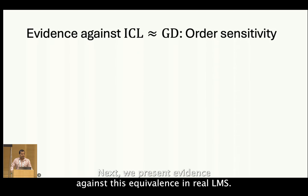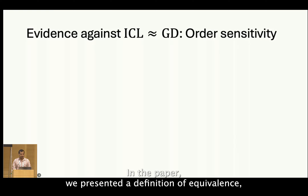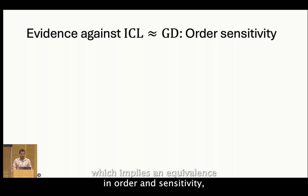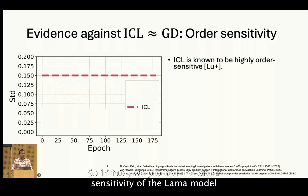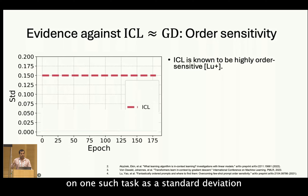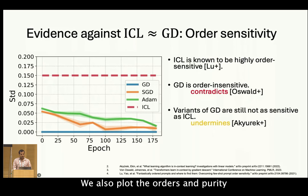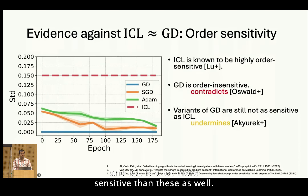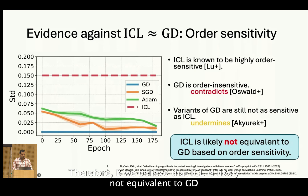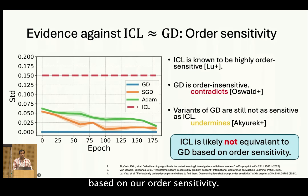Next we present evidence against this equivalence in real LLMs. In the paper, we present a definition of equivalence which directly implies an equivalence in order sensitivity. And we know that LLMs are highly order sensitive. In fact, we plotted the order sensitivity of the LLaMA model on one such task as a standard deviation in its output probabilities of individual tokens and see this high sensitivity. However, GD is order insensitive, and this directly contradicts one of the previous formulations. We also plot the order sensitivity of variants of GD like SGD and Adam, and ICL is a lot more sensitive than these as well. This undermines another formulation which allows for order sensitivity. Therefore, we believe that ICL is likely not equivalent to GD based on order sensitivity.